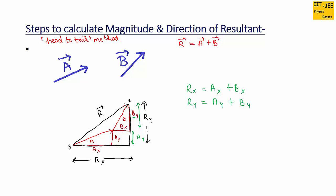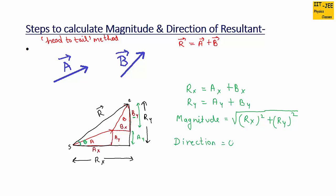Now we have the horizontal and vertical components of resultant vector r. We can use rx and ry to find the magnitude and direction. To find the magnitude of r we use the formula: square root of (rx squared plus ry squared). To find the direction — which means this angle theta — theta equals tan inverse of (ry over rx). We have studied these two formulas in detail in part 4, so please watch part 4 for more detail.